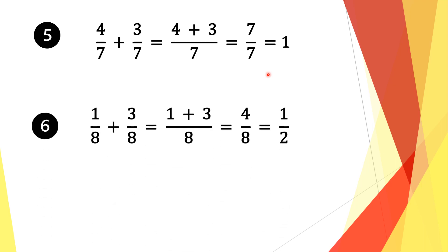Moving on to question 6. We have 1 eighth plus 3 eighths, and again we have a common denominator in both of these fractions. We take a common factor of 8. 8 divided by 8 is 1, and 1 times 1 is 1. We bring along the plus sign, then do the same for the second fraction. 8 divided by 8 is 1, and 1 times 3 is 3. We add the numerators: 1 plus 3 is 4, and we bring along the denominator 8. Now top and bottom are divisible by 4: 4 divided by 4 is 1 and 8 divided by 4 is 2. So our solution is 1 half.